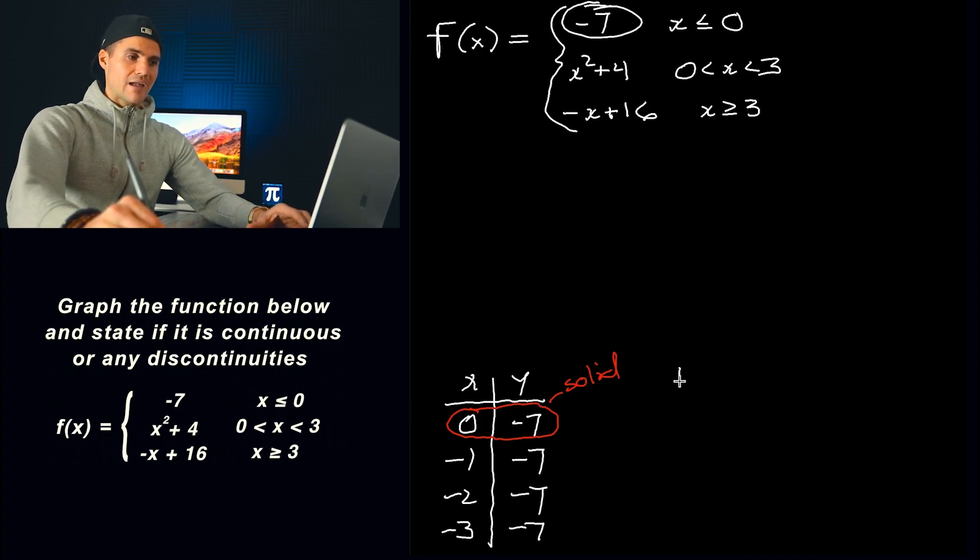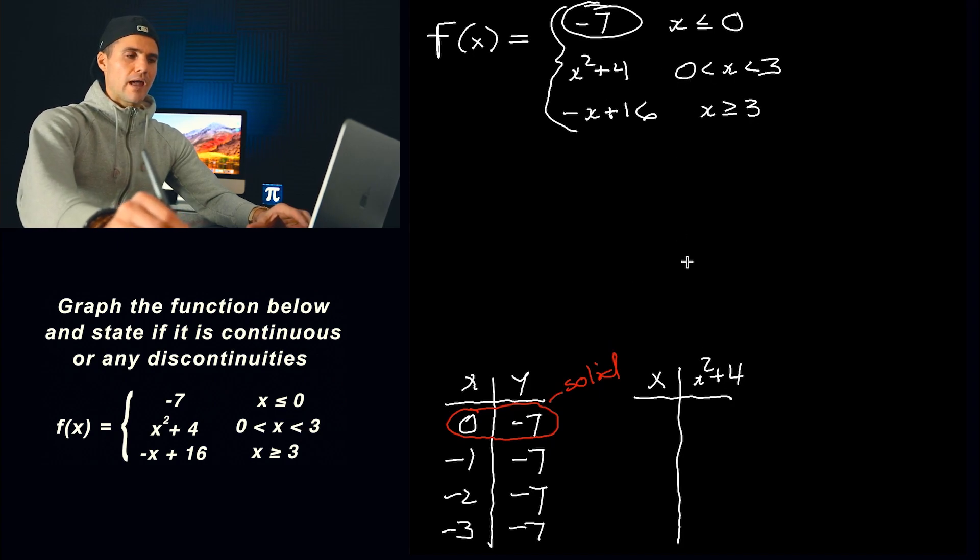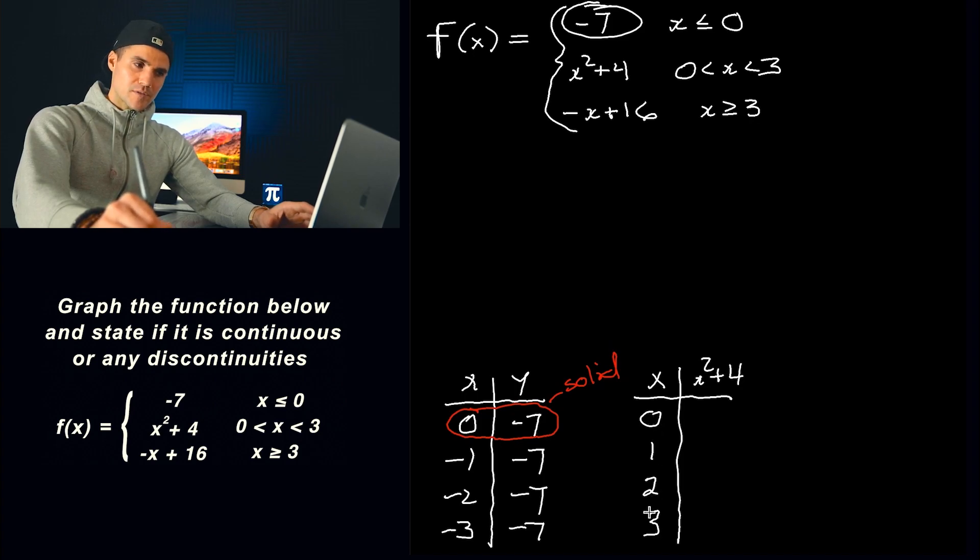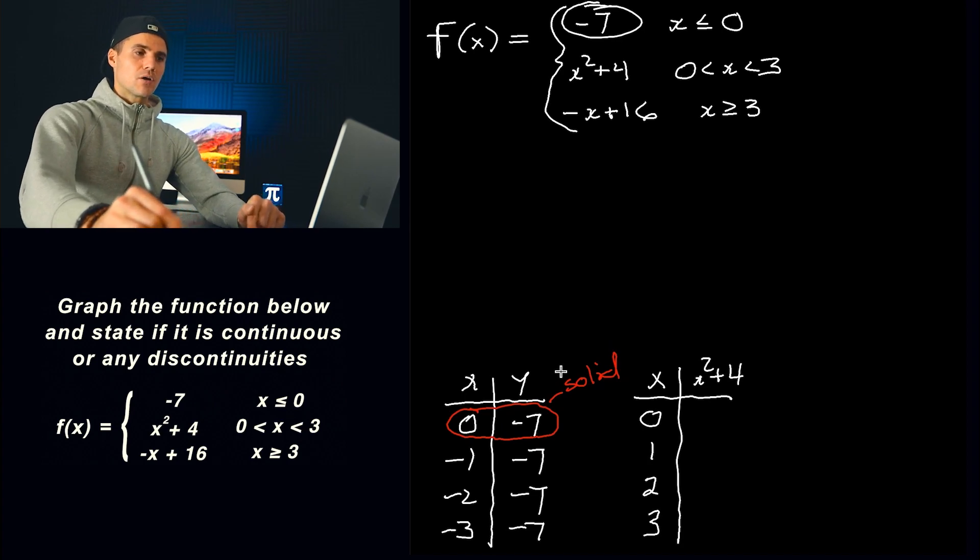Now for the second piece, we got x squared plus four. Now that's going to be between zero and three. And even though it's not including the zero and the three, you still want to put those values in the table because they're still going to go up to those values. It's just at those values, there's going to be a hole. So if we fill in the table here, zero squared plus four, that's just four, one squared plus four is five, two squared plus four is eight, three squared plus four is 13.